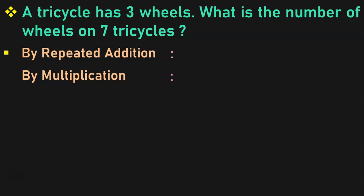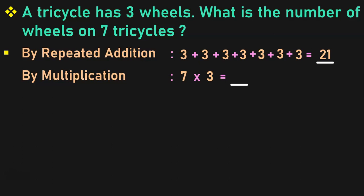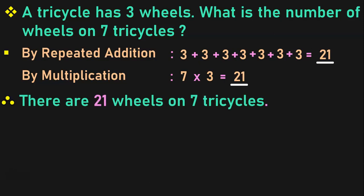Here we have 7 tricycles and each tricycle has 3 wheels. So to find the total number of wheels on 7 tricycles, we must add 3, 7 times: 3 plus 3 plus 3 plus 3 plus 3 plus 3 plus 3. I am adding 3 seven times because there are 7 tricycles and each of which has 3 wheels. When you add 3 seven times, you get the answer to be 21. How do you represent this in the form of multiplication? We have 7 groups of 3 items each, so it is 7 into 3 — 7 threes are 21. Therefore, there are 21 wheels on 7 tricycles.